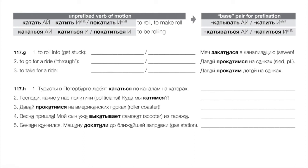Tourists in Petersburg love to ride along the canals in катера — small tour boats. We use кататься here because we're talking about the general activity: tourists like to go for rides on these boats in Petersburg.